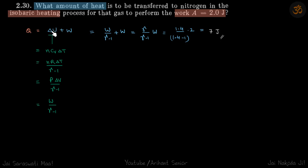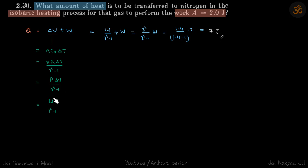We don't know ΔU, so let's write ΔU as NcvΔT, which equals NrΔT/(γ-1). In an isobaric process, NrΔT equals PΔV, and PΔV is the same as work done W. So ΔU = W/(γ-1).